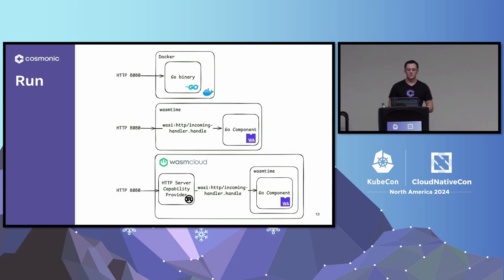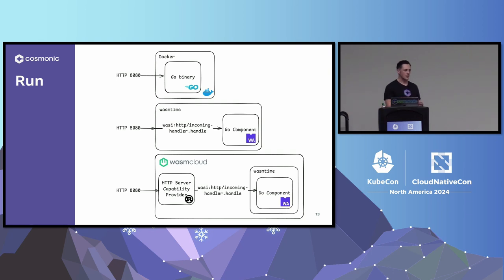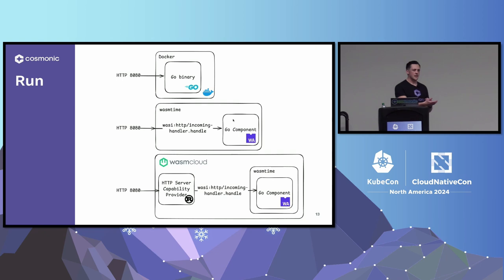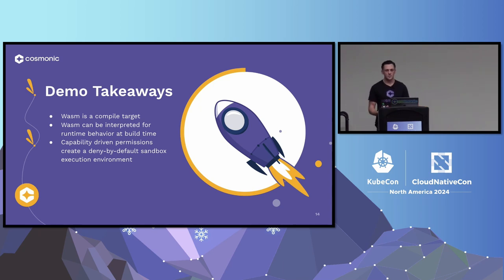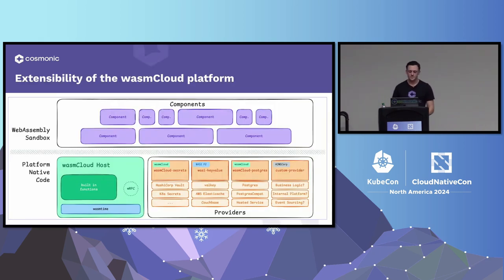One important difference when running the component versus the Go Docker container: when I send a localhost HTTP request in Docker, it hits the port directly — my Go microservice listens on that port. With WebAssembly, the component doesn't have the ability to open a local address and listen for HTTP requests. When you run it using a WebAssembly runtime, the runtime is the entity that spins up a local TCP address and then calls the function handler for HTTP on the component. The component itself is not setting up that resource — and we can deny that if we'd like.